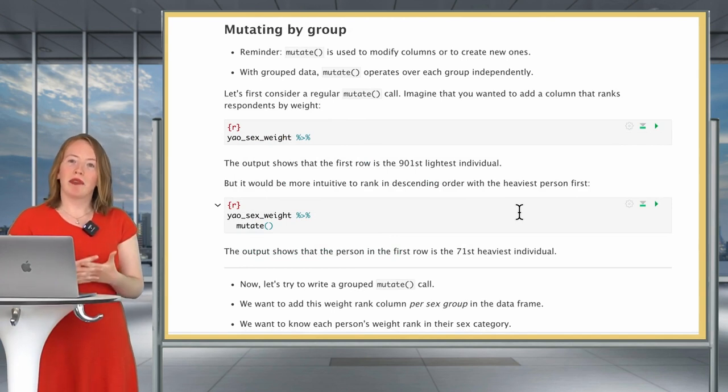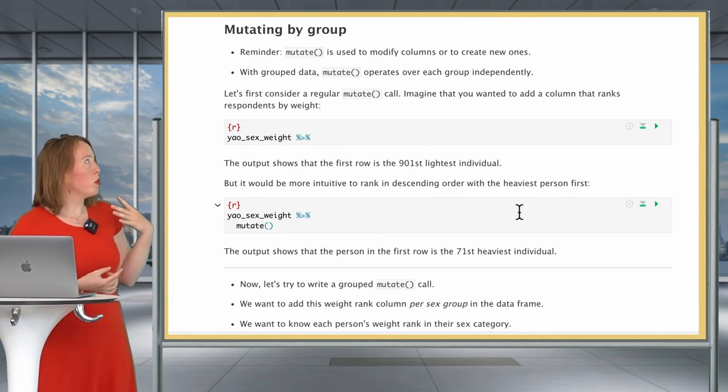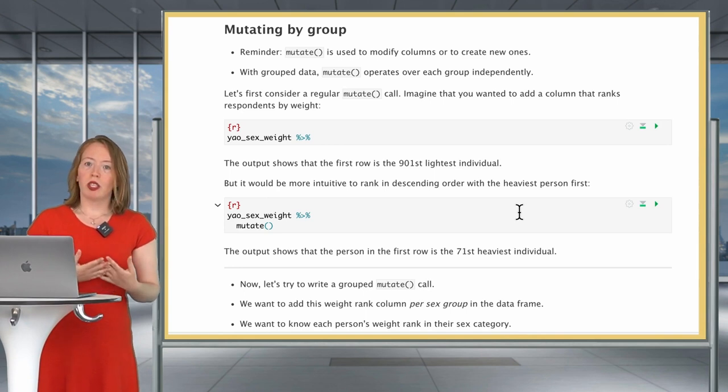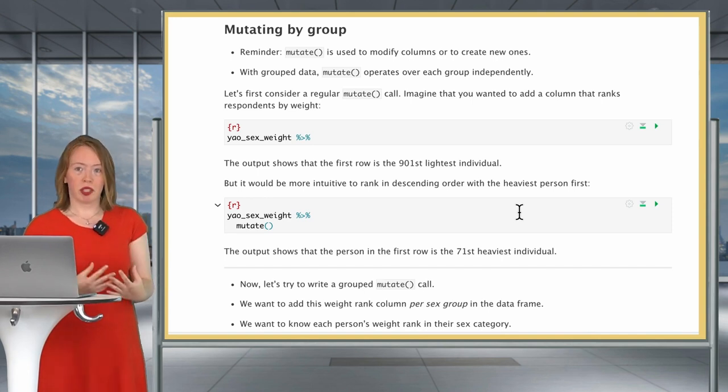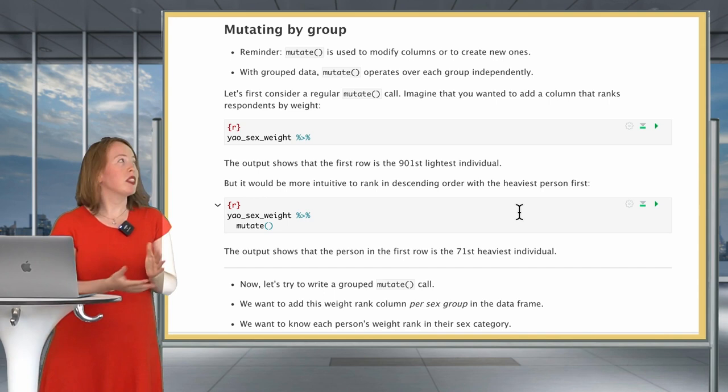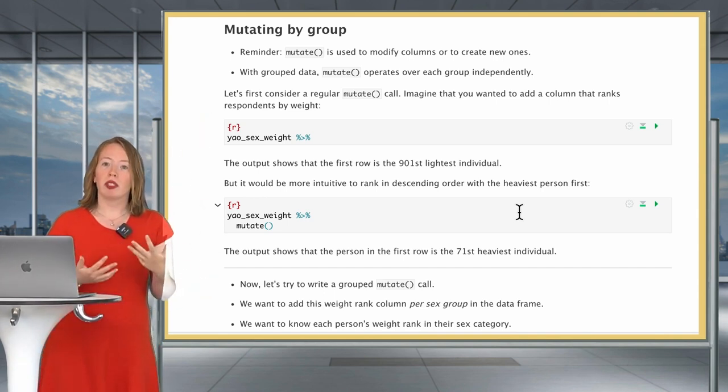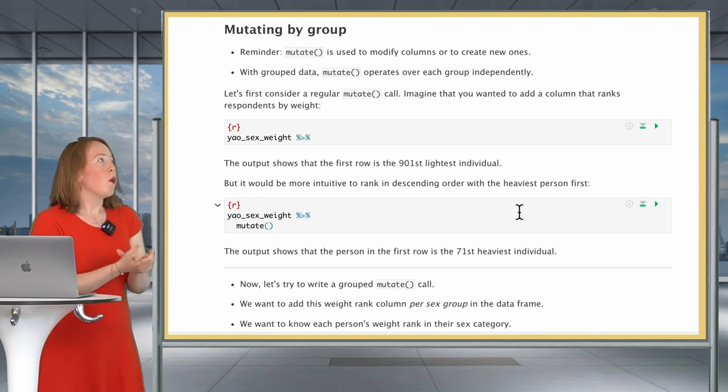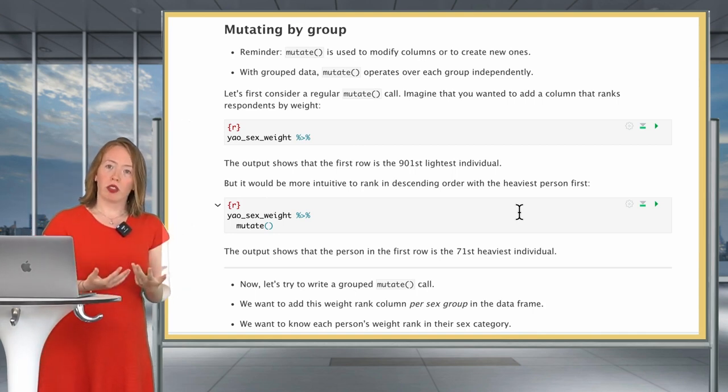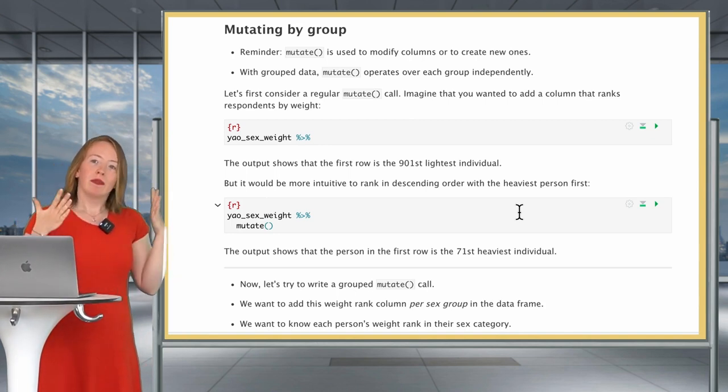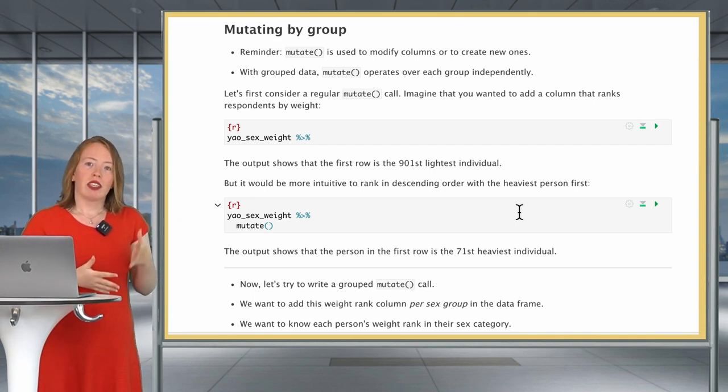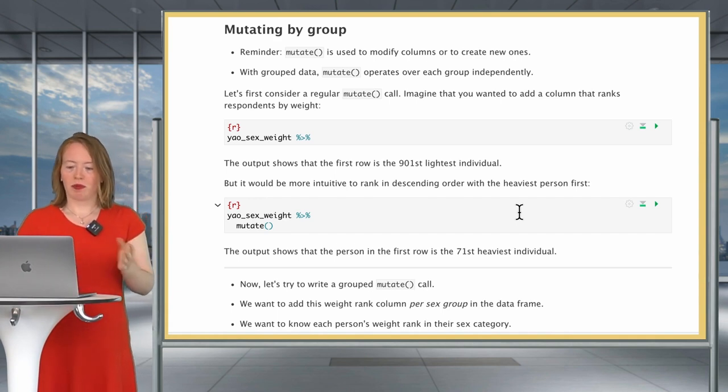Welcome back. I hope you now feel comfortable with filtering on groups by combining filter and group_by. We will now move to another combo, very powerful as well, which is mutating by group, which, as you can expect, is going to combine group_by and mutate. As a kind reminder, although once again, I'm pretty sure you're familiar with this by now, mutate is used to modify columns in place or to create new ones. With grouped data, mutate operates over each group independently. That's kind of the common song of these groupings. It's that when you apply a verb over them, then the wrangling is going to be applied by group.